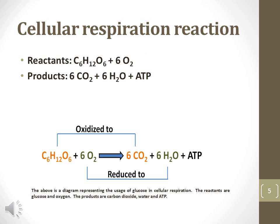Cellular respiration is a complex series of chemical reactions that converts glucose, drawn here as C6H12O6, and oxygen, drawn as O2, into carbon dioxide, CO2, water, H2O, and ATP, which is used as energy. Glucose loses electrons by losing hydrogen atoms. Therefore, glucose is oxidized to form carbon dioxide.